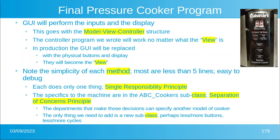The specifics to the machine are in the ABC cookers subclass, and this is the separation of concerns principle. The departments that make those decisions could specify another model — instead of ABC cookers, maybe it's CDE cookers. The only thing we need to do to add or subtract buttons or cycles would be to create a new subclass. The buttons are already defined unless they come up with some new fancy button, and that's the separation of concerns principle. Hope you enjoyed, and I'll see you next time.